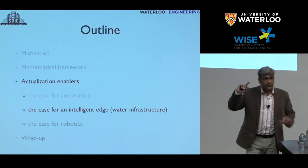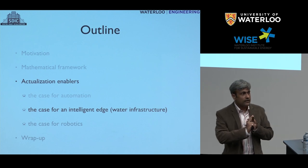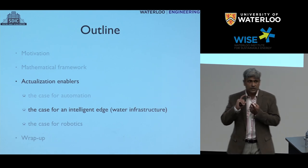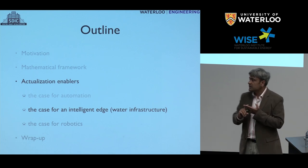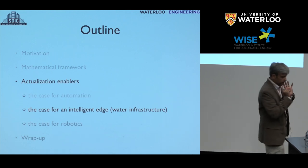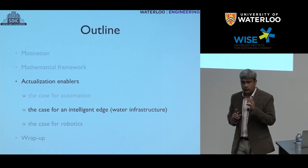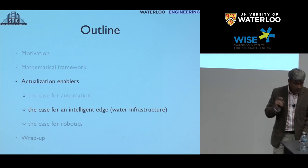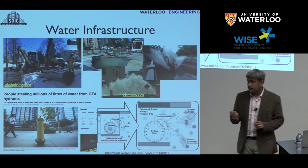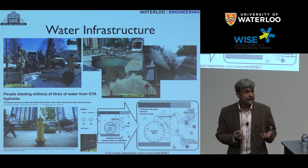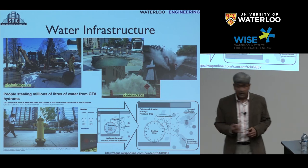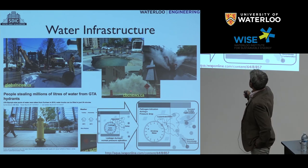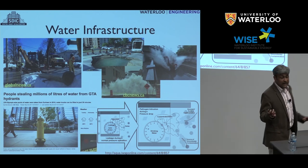The second actualization enabler that's very important for going from data to knowledge is an intelligent edge. One of the projects we're working on is in the area of water infrastructure. This is a classic case where intelligent edge is not just a useful thing to have — it's a necessary thing. When you look at local news in winter, the first thing you often hear is there's a water main burst somewhere. One of the projects we started looking at in the context of smart infrastructure is: can we predict water main bursts before they happen?